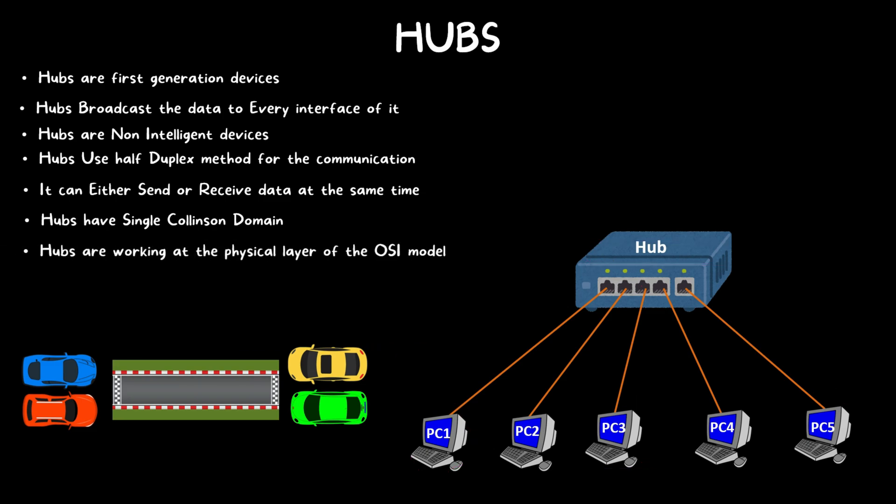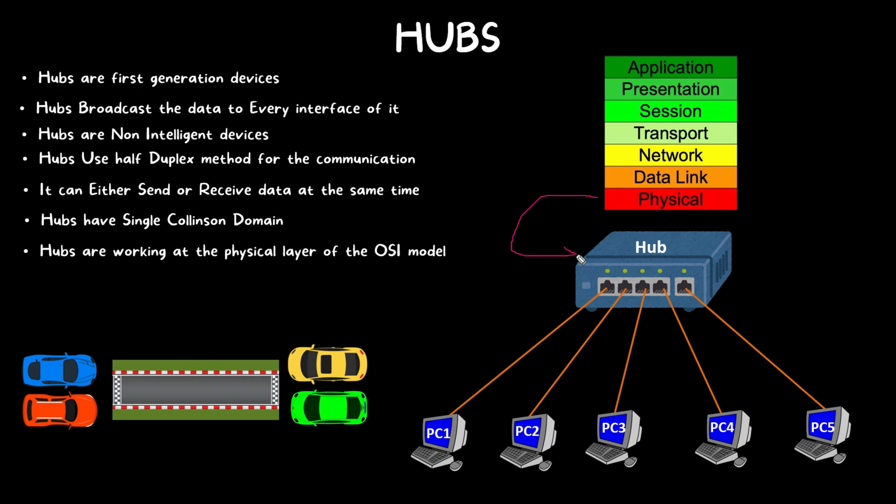Another characteristic of network hubs is that they work at the physical layer of the OSI model. The OSI model stands for Open System Interconnection model and describes the seven layers that computer systems use to communicate over a network. It is considered the first standard model for network communication. The physical layer is responsible for the physical cable or wireless connection between network devices. Because hubs are non-intelligent devices, they operate at the physical layer.